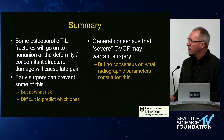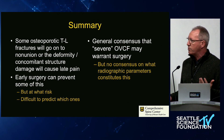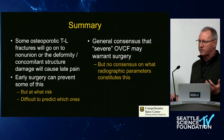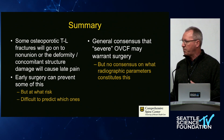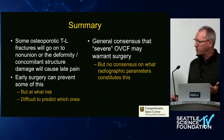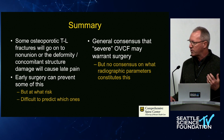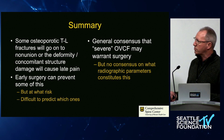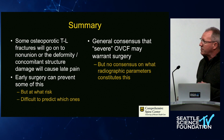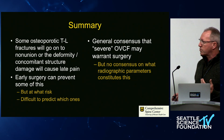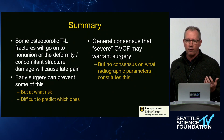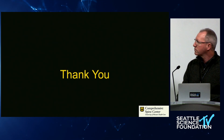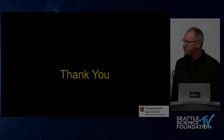In summary: some osteoporotic thoracolumbar fractures will go on to non-union or progressive deformity and cause late pain. We're developing evidence that early surgery can prevent some of this, but at what risk to the patient? It remains very difficult to predict which patients would benefit from prophylactic surgery. There is general consensus that severe osteoporotic compression fractures can warrant surgery, but right now there are no clear consensus radiographic parameters defining that threshold. That's my read on where we are in terms of the evidence base.